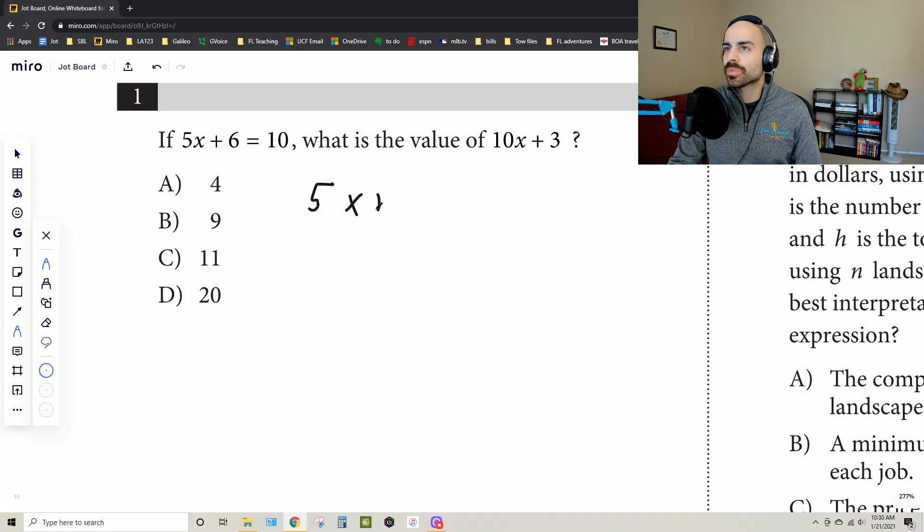So 5x plus 6 equals 10, and they want us to figure out what this equals. Well, first we can get x by itself here and solve by plugging it back into this equation. So then we end up with 5x equals 4, because we would subtract 6 from both sides. And then we see that x would equal 4 over 5, and then we plug that now in for x here.